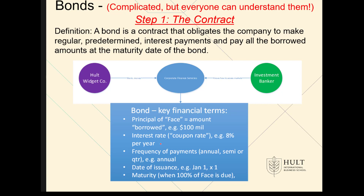The interest rate or coupon rate in this example is eight percent per year. The frequency of payment — we've called this term before — is annual. Again, we typically do semi-annual, but we'll use this for simplicity. Next is the date of issuance: January 1st, year one. And then maturity is always at 100 percent of the face amount, due in this case five years from now.